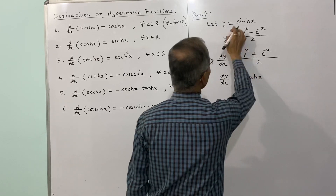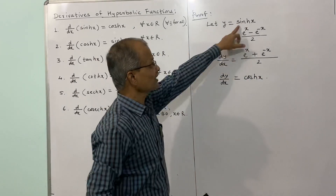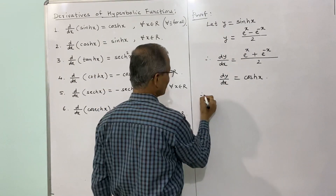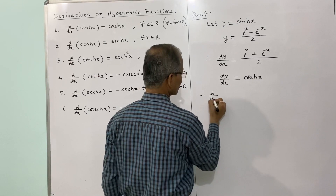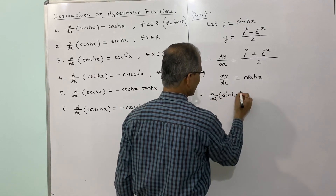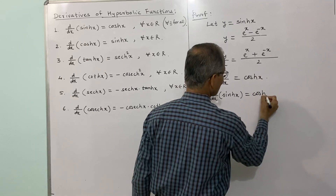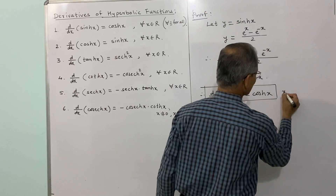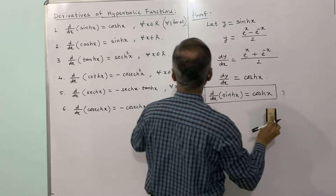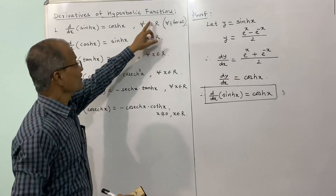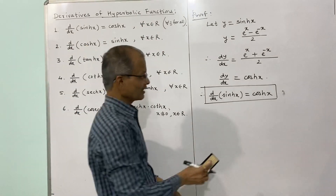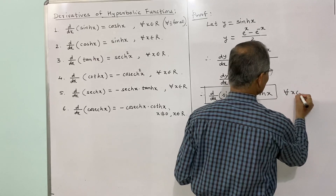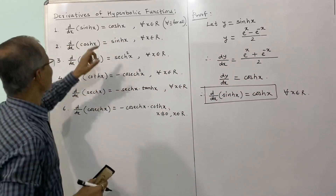Thus dy/dx equals hyperbolic cos x. Since y is hyperbolic sin x, its derivative is hyperbolic cos x. Therefore our first result is: d/dx of hyperbolic sin x equals hyperbolic cos x, and this is true for all x belonging to the real numbers.